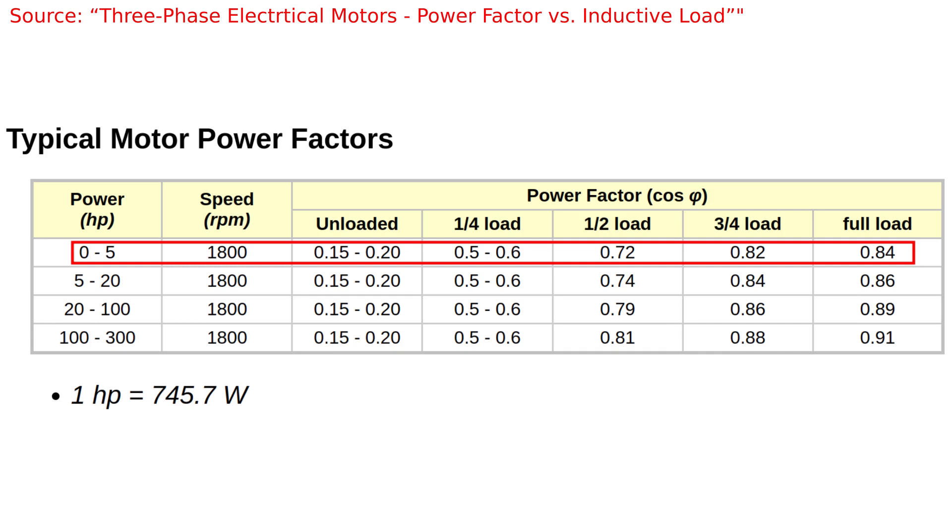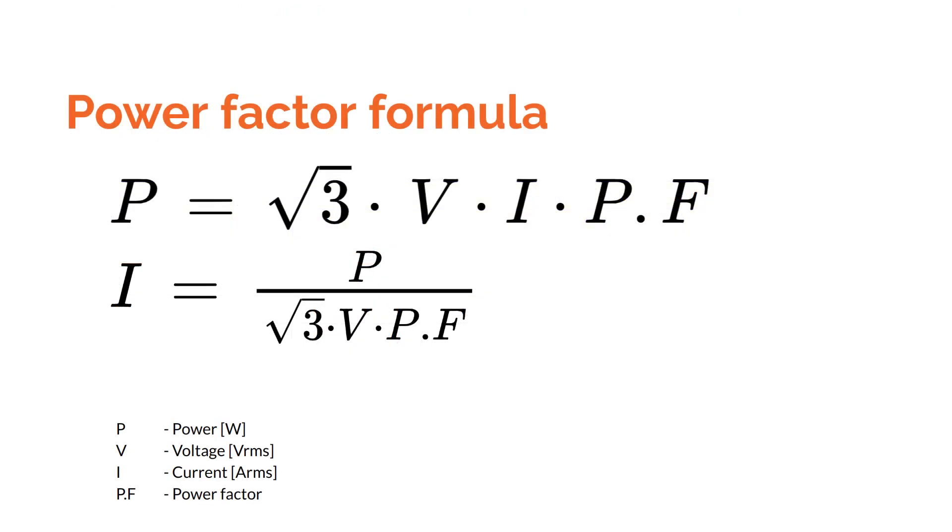So, why did I use the power factor at full load in the equation when calculating the continuous current? According to the equation, because the power factor is in the denominator, a smaller power factor would mean I would need to handle a higher current. I used the full load power factor in the equation because the highest current consumption of a motor is at full load, despite having a higher power factor.